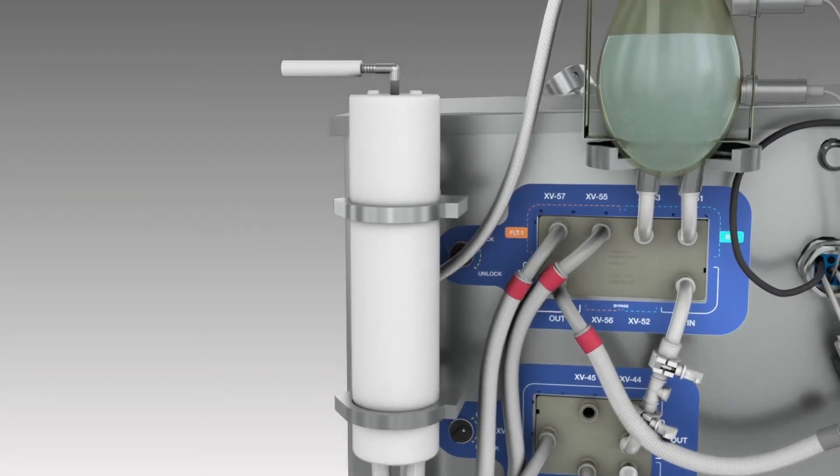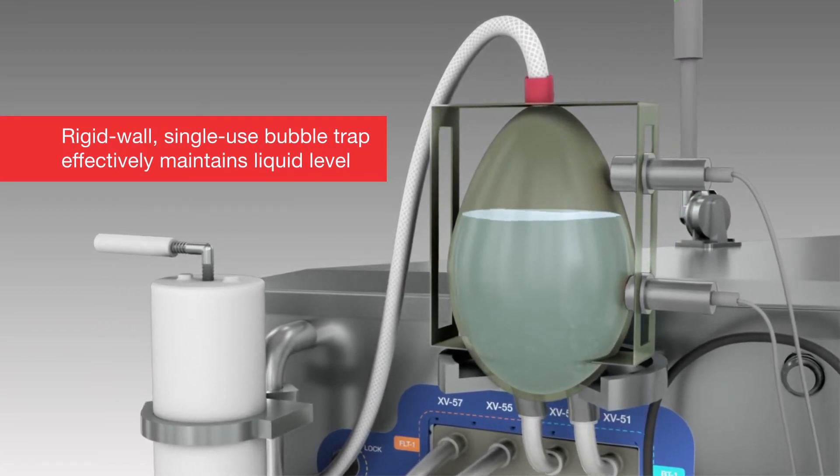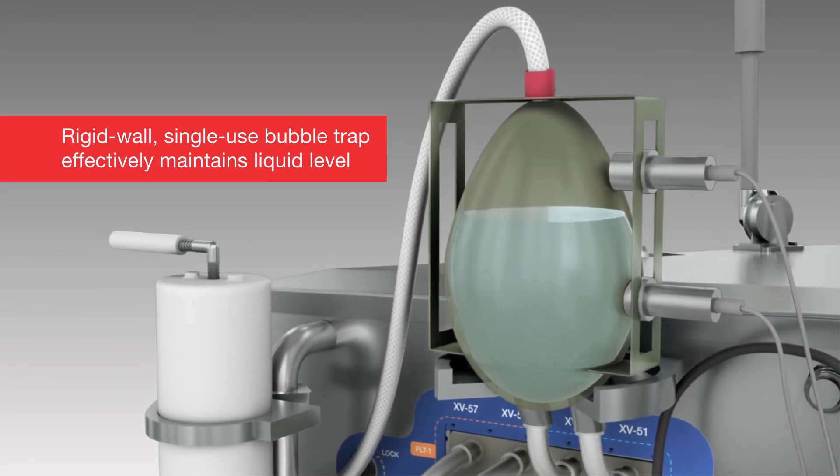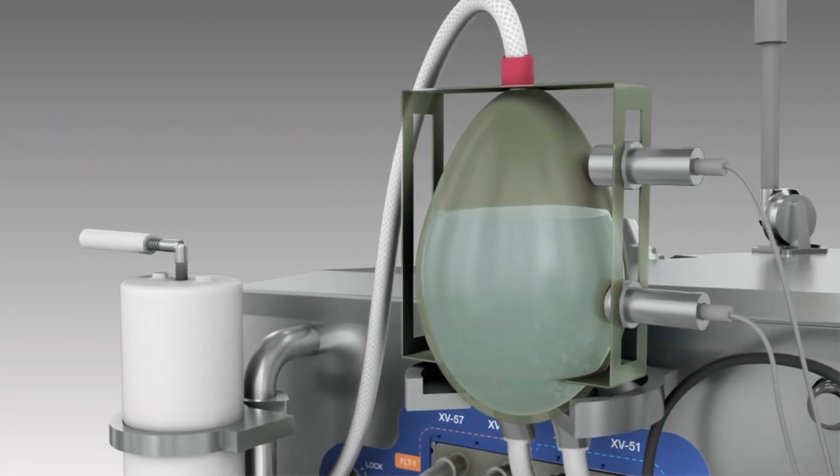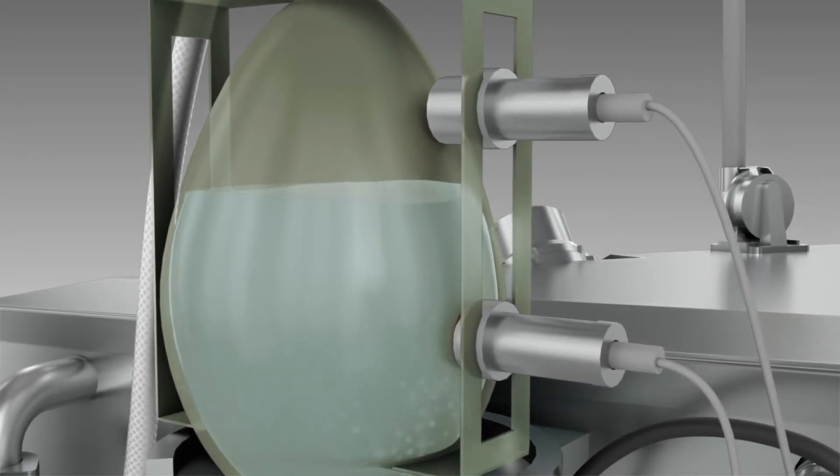The High Peak System minimizes air bubbles during chromatography by use of a novel rigid wall single-use bubble trap, available in sizes that match the size of the fluid assembly being used. Liquid level is effectively maintained by use of capacitive proximity sensors.